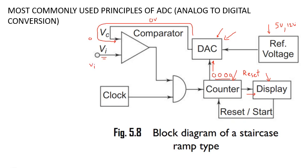The comparator output will be logic one because one input is zero and the other is greater than zero — so the comparator output is set to one. That output is given to an AND gate. One input of the AND gate is the comparator output, which is one, and the other input is a clock signal.